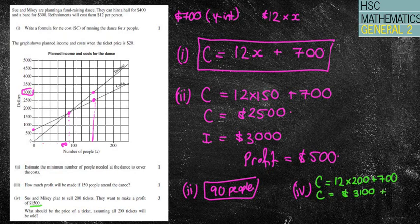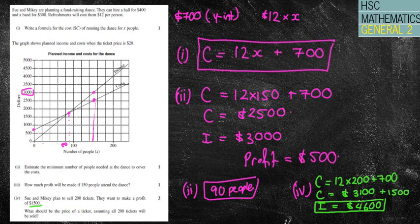Now we want to have a profit of $1500. So I need to tack on $1500 there to show what my income needs to be. So if I add on $1500 I'm going to have an income of $4600. That's what I need to have. Therefore if I want to find out how much per ticket. Well I'm going to have 200 tickets. So I'm going to divide that amount by 200. And I come up with an amount of $23 per ticket.